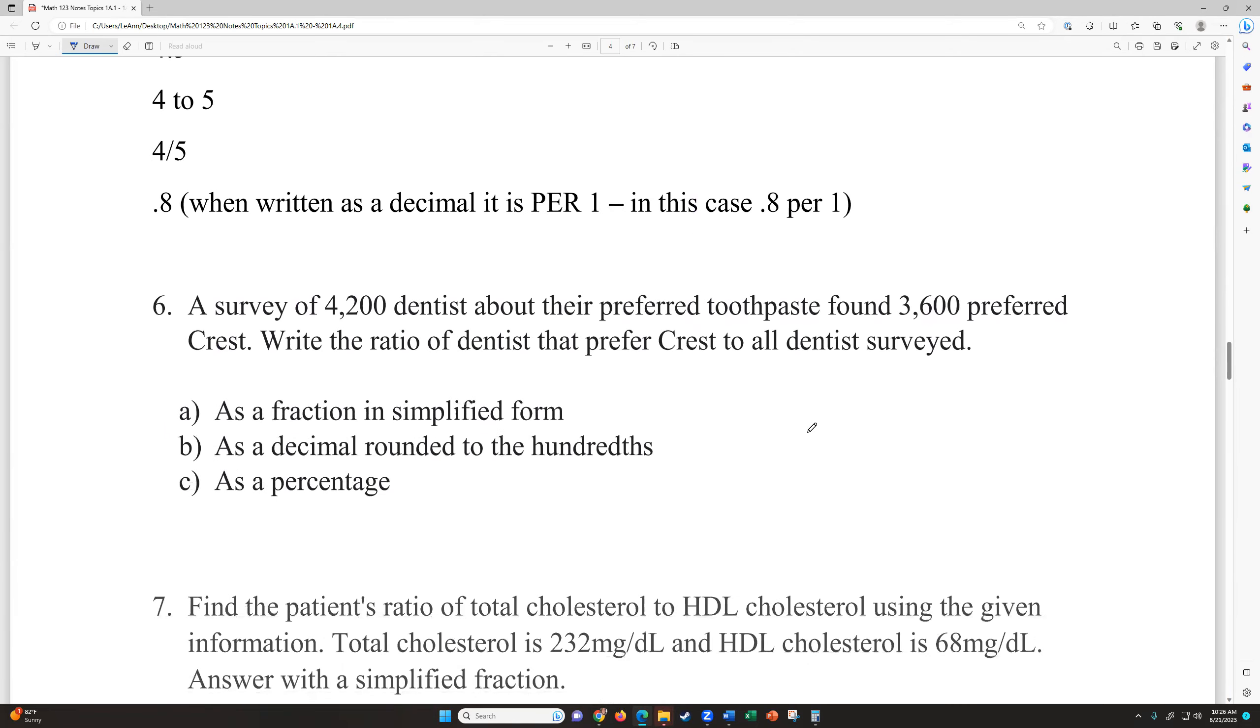So let's do this first one. It says a survey of 4,200 dentists about their preferred toothpaste found that 3,600 preferred the Crest brand. So write the ratio of dentists that prefer Crest. So this is the big important part. You need to read the order. Dentists that prefer Crest to all the dentists surveyed. So I like to think of it as A to B. This is our A, because these are the ones that preferred Crest. And this is our B part, the ones that were all dentists surveyed. So as a fraction, you would write A over B. So this would be 3,600 over 4,200. We're going to use our calculator button to reduce that. That reduces down to 6 over 7. So there's the ratio in fraction form.